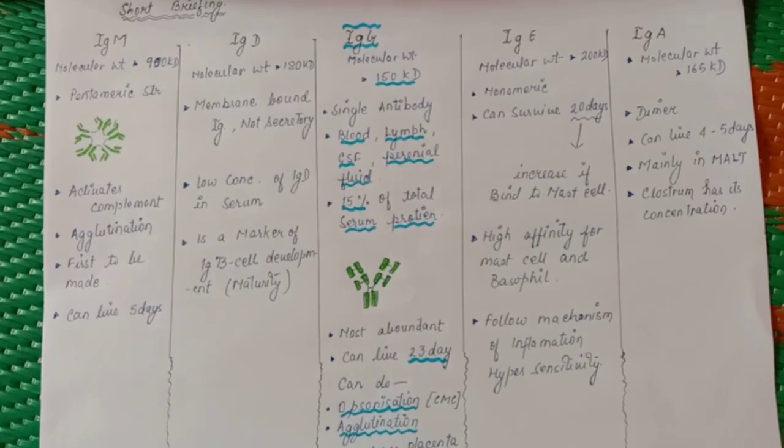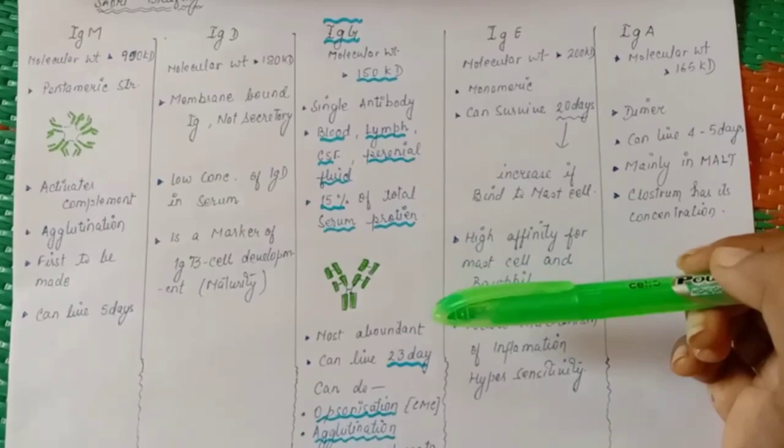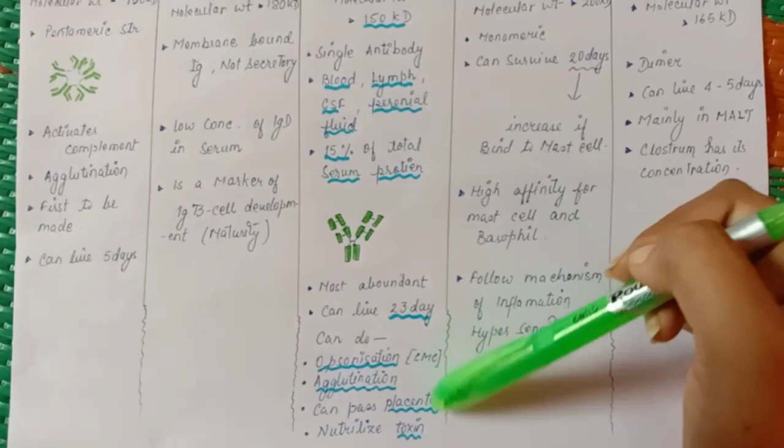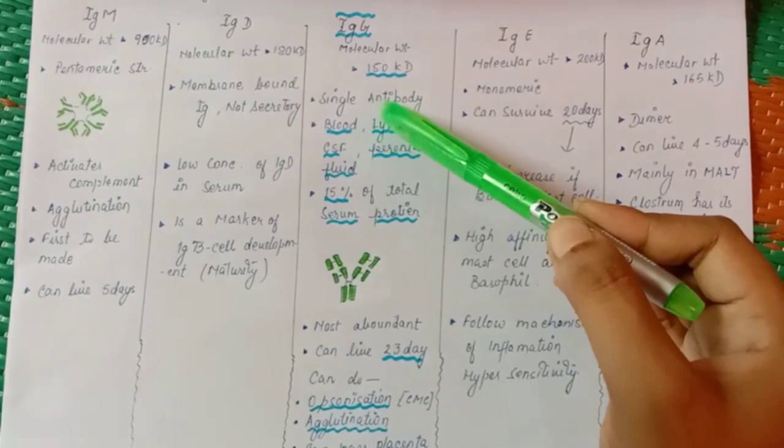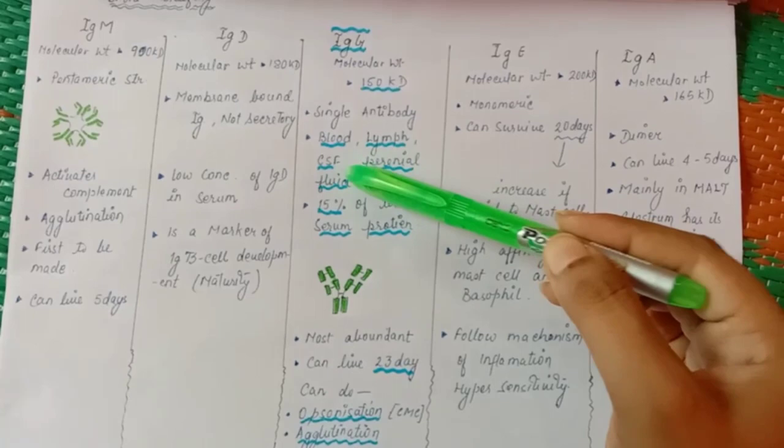Why am I starting with IgG? Because it is the most abundant. So we can have unique feature as it is the most abundant antibody. Mark it. It is a unique feature. It can pass placenta. This is also a unique feature. Two unique features we have. Molecular weight is about 150 kilodalton. Single antibody is found. It is found in blood, lymph, cerebrospinal fluid, peritoneal fluid, etc.